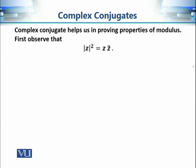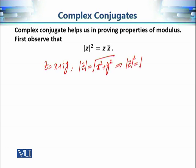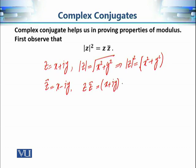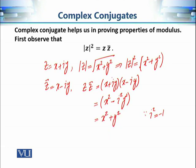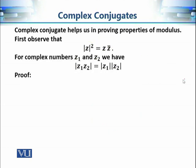The next property relates the conjugate and the modulus. We have |z|² = x² + y². Multiplying z by z̄ gives (x + iy)(x − iy) = x² − i²y² = x² + y², since i² = −1. Therefore z · z̄ = |z|². This key property can be used to prove further properties of complex numbers.